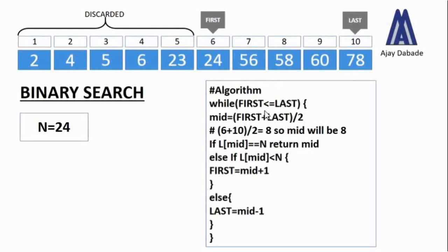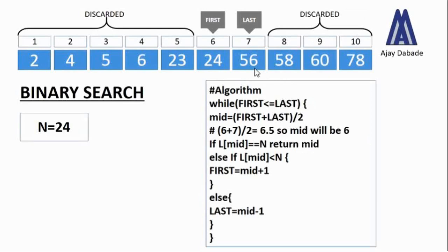The while loop runs again: first is 6, last is 10, so the condition is true. We calculate mid as 6 plus 10 divided by 2 = 8. The if statement checks l[8] which is 58 — not equal to 24, so it goes to the else part. The condition l[mid] < n checks whether 58 is less than 24, which is false. So we go to the else part and update last to mid minus 1, which is 8 minus 1 = 7. Now last points to position 7, which is 56.